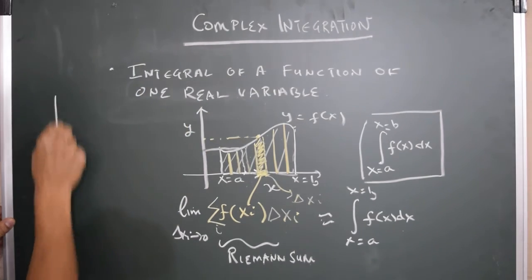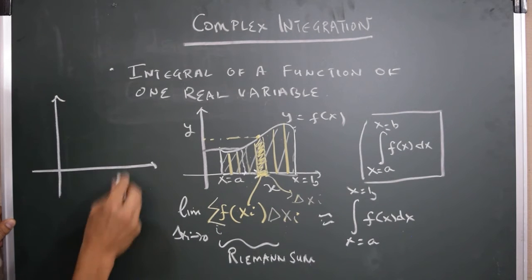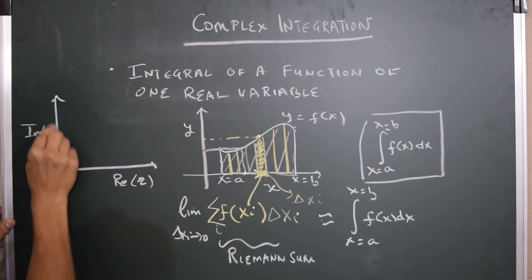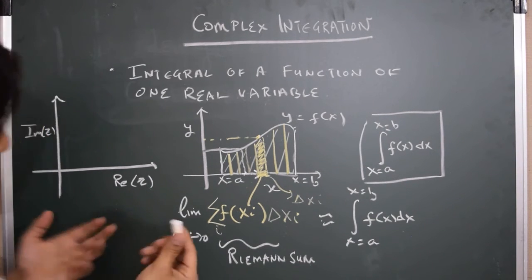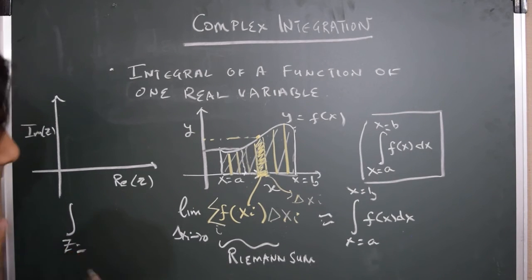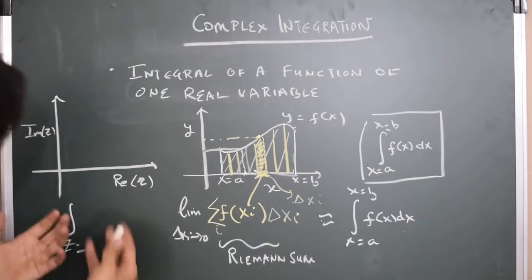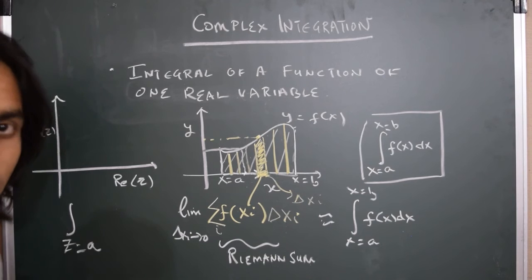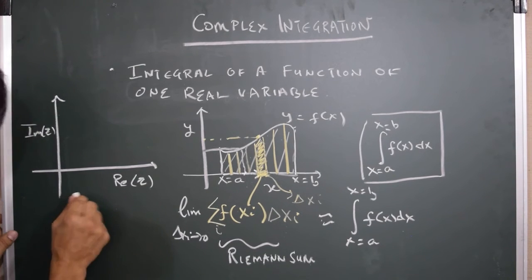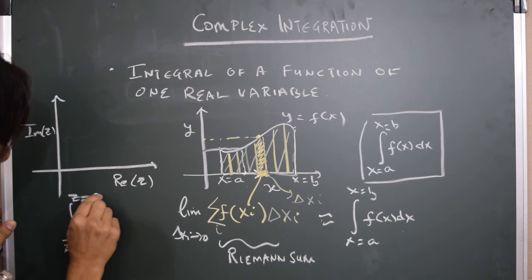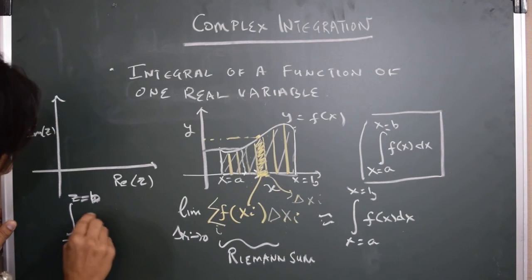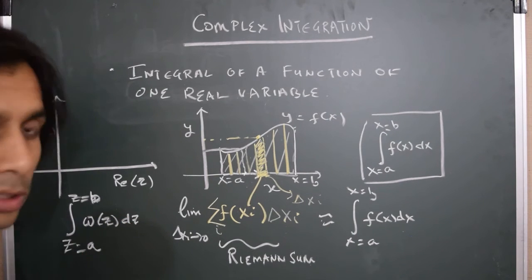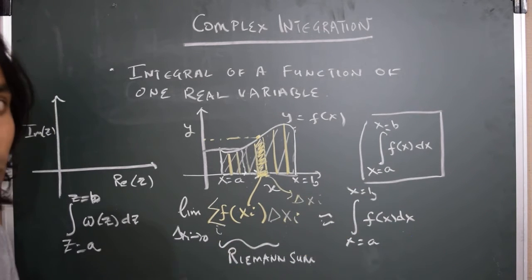For instance, let's draw the complex plane, where this is the real part of z and this is the imaginary part of z. We want to think about importing the integral symbol onto the complex plane — so we want to integrate a function of a complex variable from the complex point z equals a to z equals b: the integral of some complex function w of z dz. I'm taking some liberty with this notation, but let's just say we want to generalize this idea onto the complex plane.